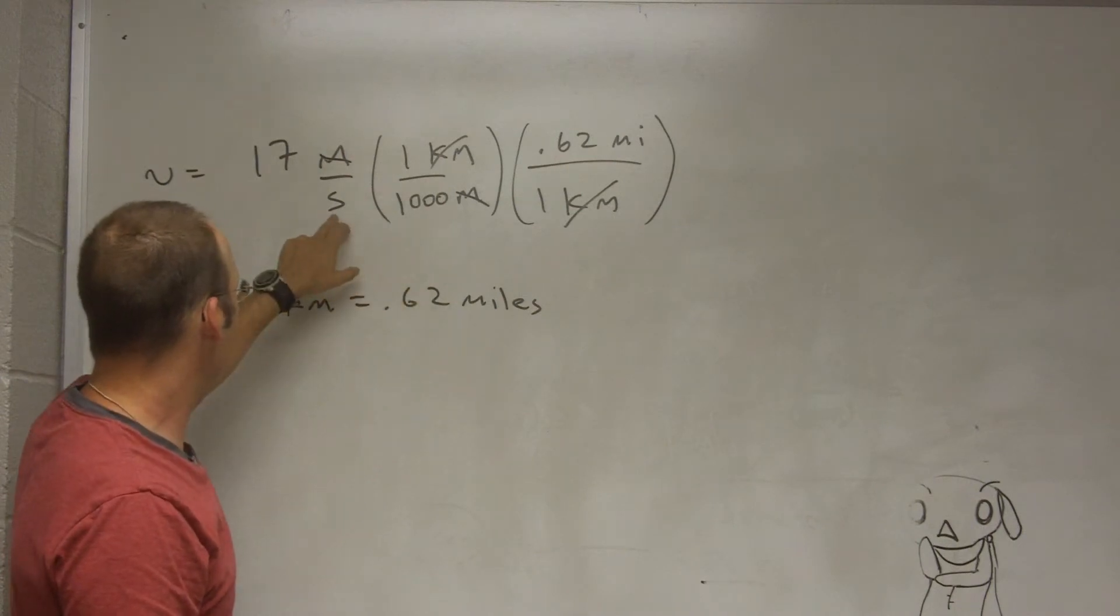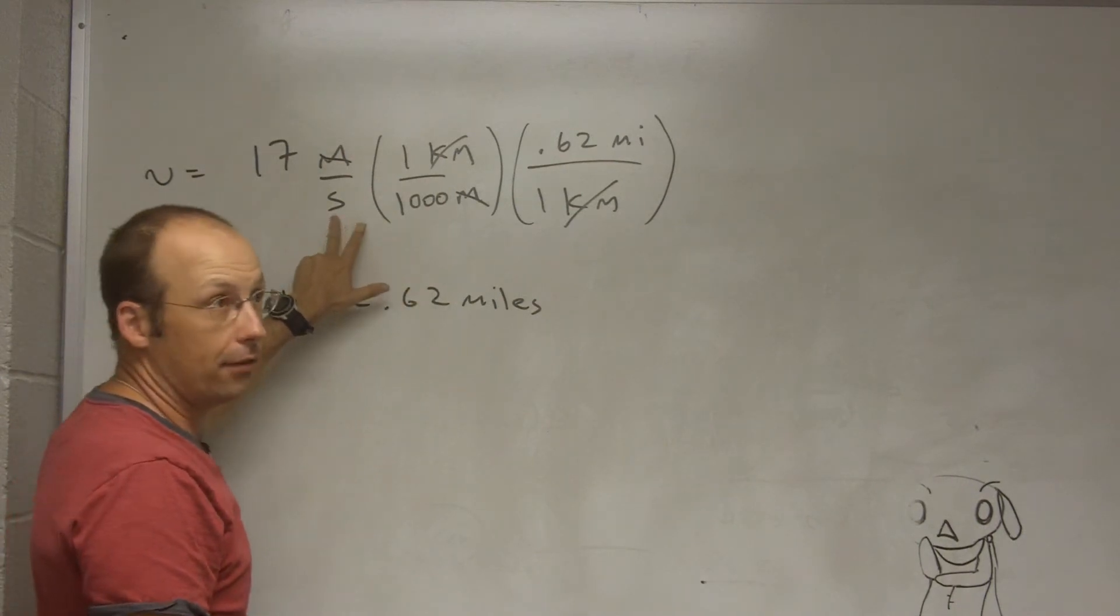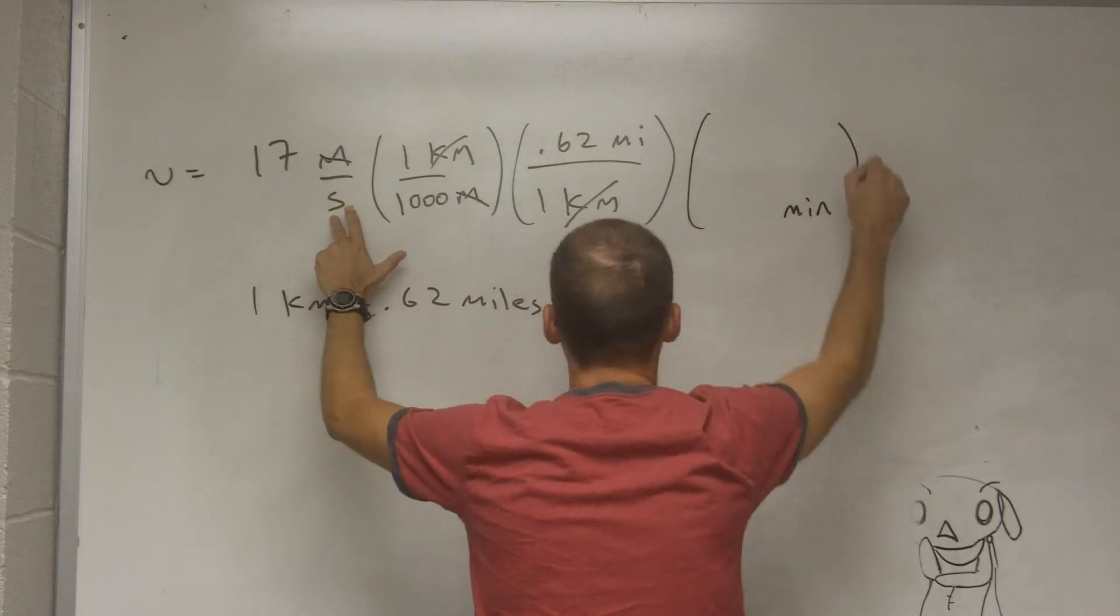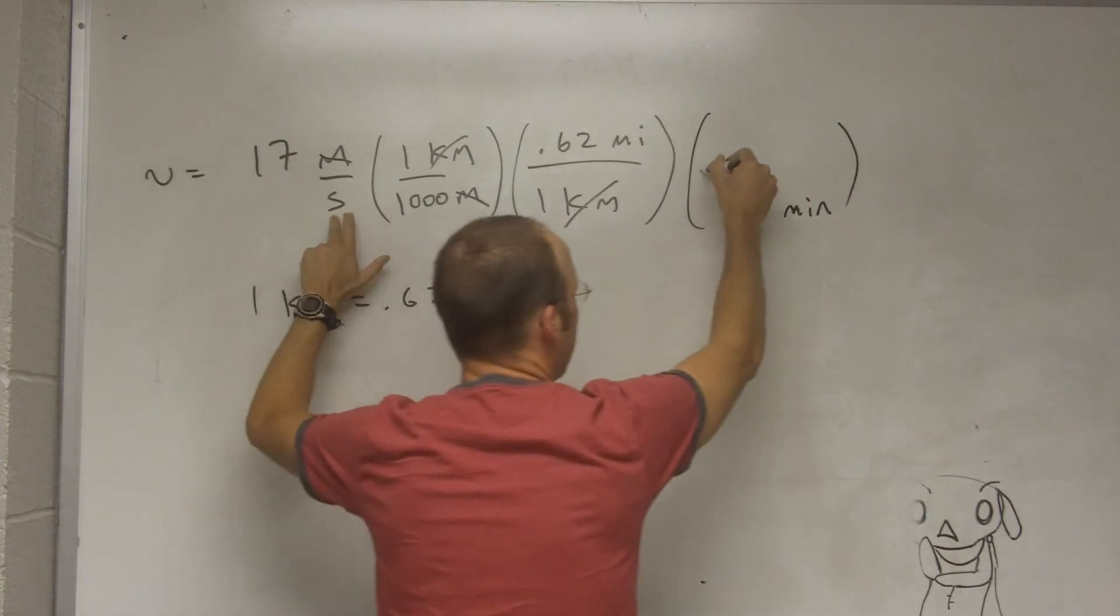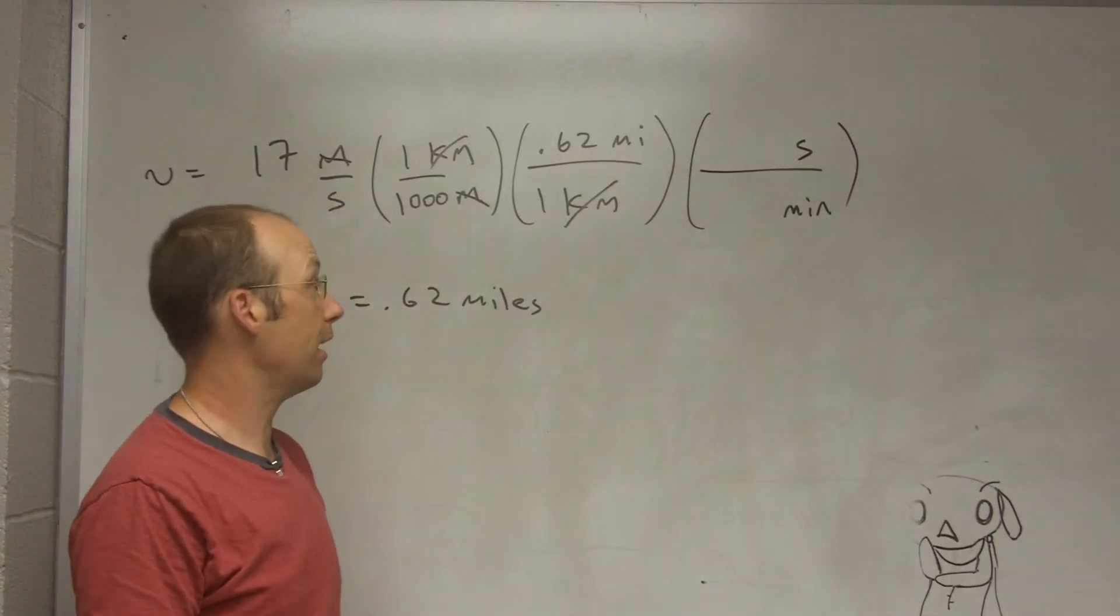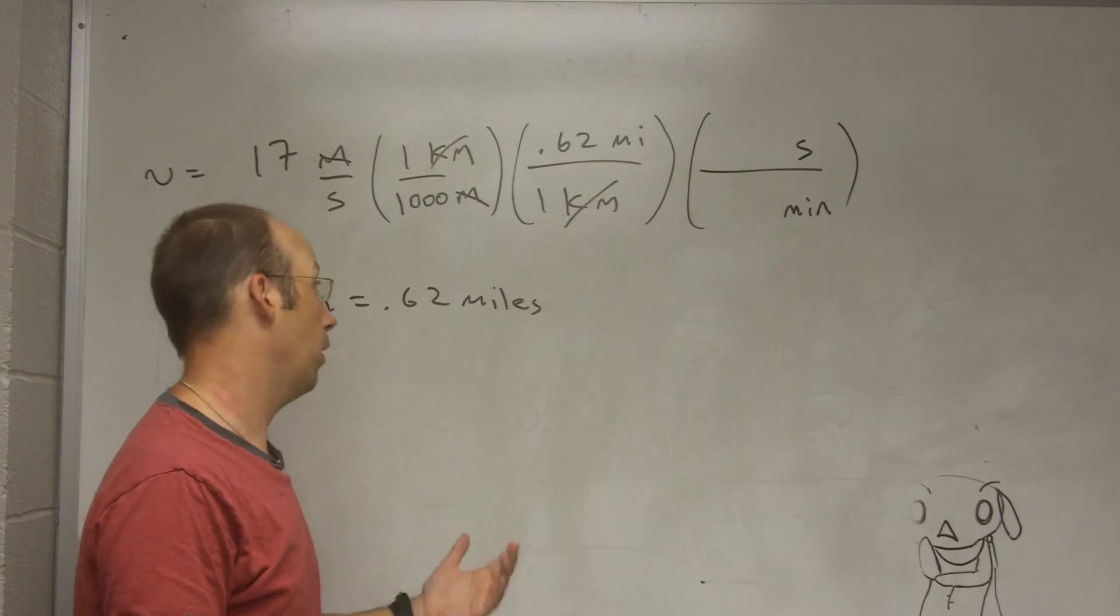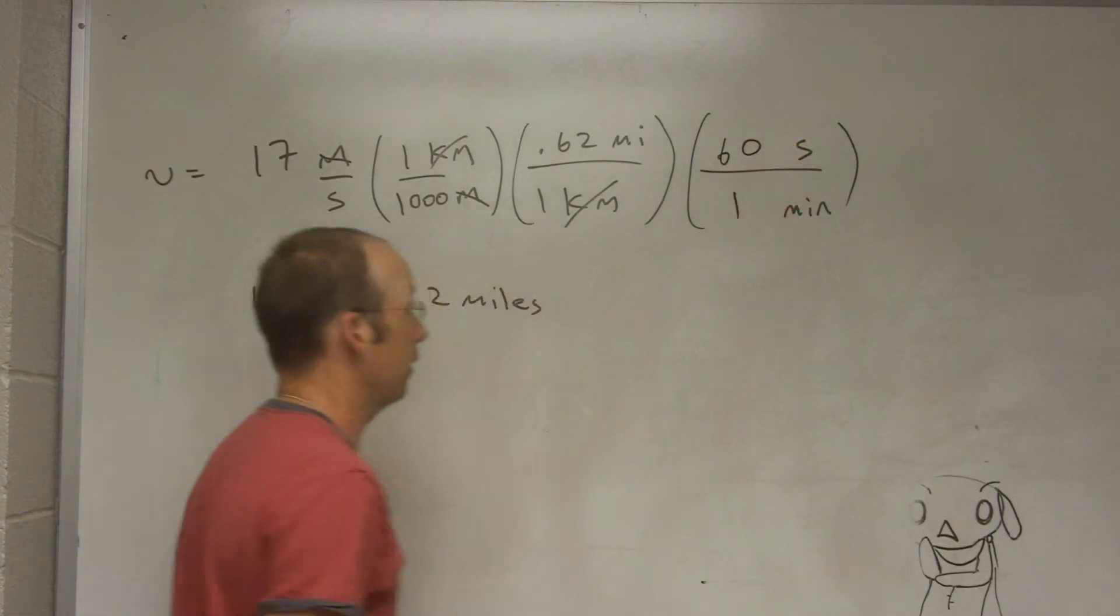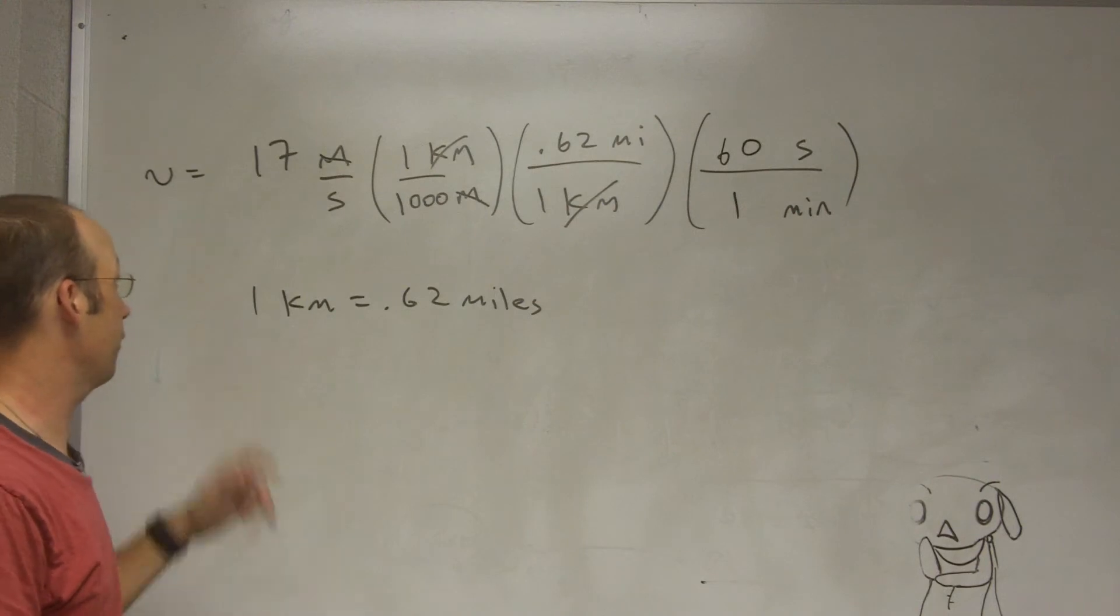Okay, now I want seconds, I want, let's just change that to minutes, I'll do it the long way. So I'm going to want minutes on the bottom because it was seconds. And I want seconds on the top. So now I just need to know what's the relationship between seconds and minutes I can put there. Well, I mean, I think we all know there are 60 seconds in one minute. And now the seconds will cancel.